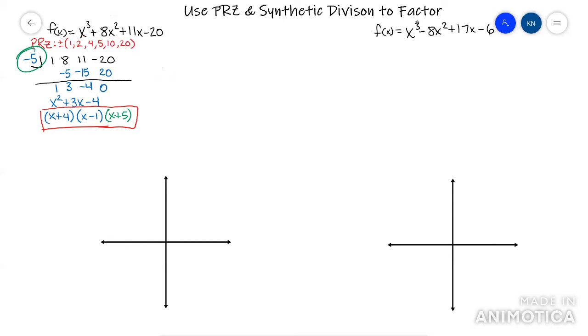It's one of the factors. So this red box is the same as this equation in standard form. Now that it's in factored form, you should be able to go and put it on the graph. So start with your x-intercepts. There's one at 1, there's one at negative 4, then there's one at negative 5.